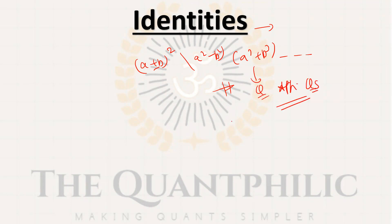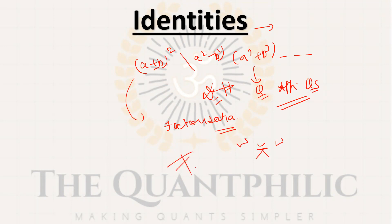Application-based questions will come; direct may not. Parallel to this, the inverse type of topic is factorization — factorization of a quadratic. You must know how to split the middle term so that the sum is the middle term and the product is the first and last terms. This is very basic.